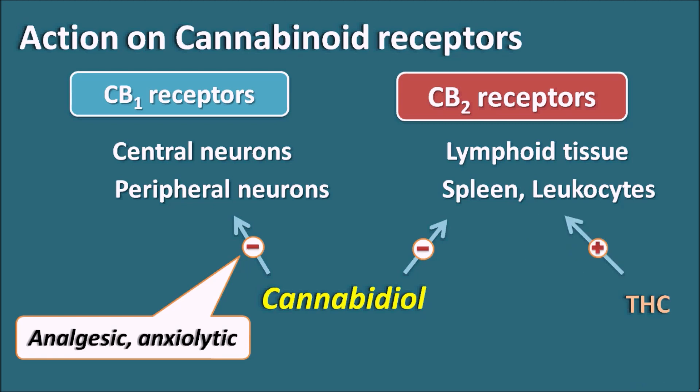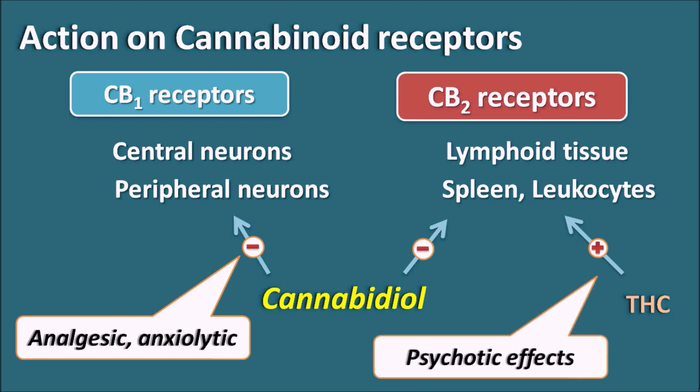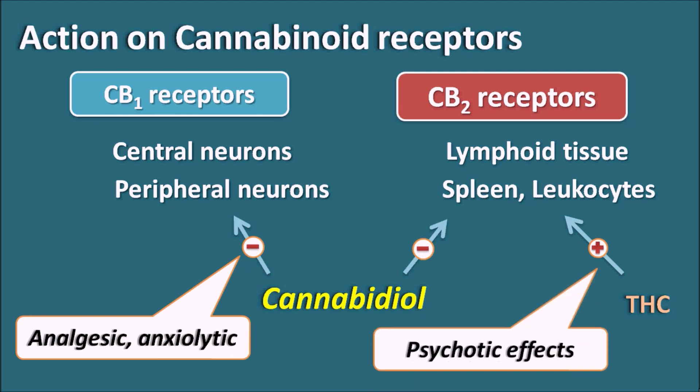The other component, THC, can act as a partial agonist on CB2 receptors. Because of its partial agonist activity, THC can show some psychotomimetic effects like hallucinations and delusions in patients. Cannabidiol, which is not an agonist but an antagonist on these receptors, does not show these psychotomimetic effects, thereby being free of hallucinations, delusions, and other psychoactive symptoms.